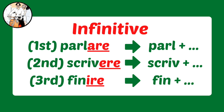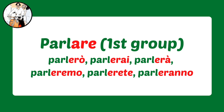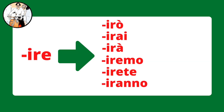What you need to do is simply add the future endings. For the first and second group, for example, parlare becomes: io parlerò, tu parlerai, lui parlerà, noi parleremo, voi parlerete, loro parleranno. And for verbs ending in -ire, you add: irò, irai, irà, iremo, irete, iranno.